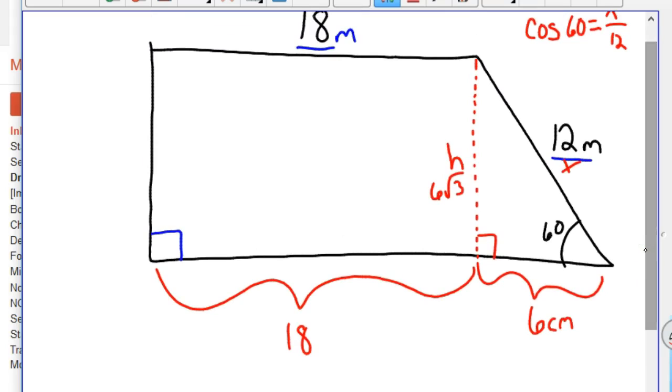So now we can go ahead and calculate the area of these. And so the area of the triangle is going to be 6 times 6 root 3 divided by 2. Because base times height divided by 2. And so we'd have 36 root 3 divided by 2. Or 36 divided by 2 is 18 root 3. So that triangle is 18 root 3. The rectangle is 18 times 6 root 3. Because base times height. And so that is 108 square root of 3 for the rectangle in the middle.